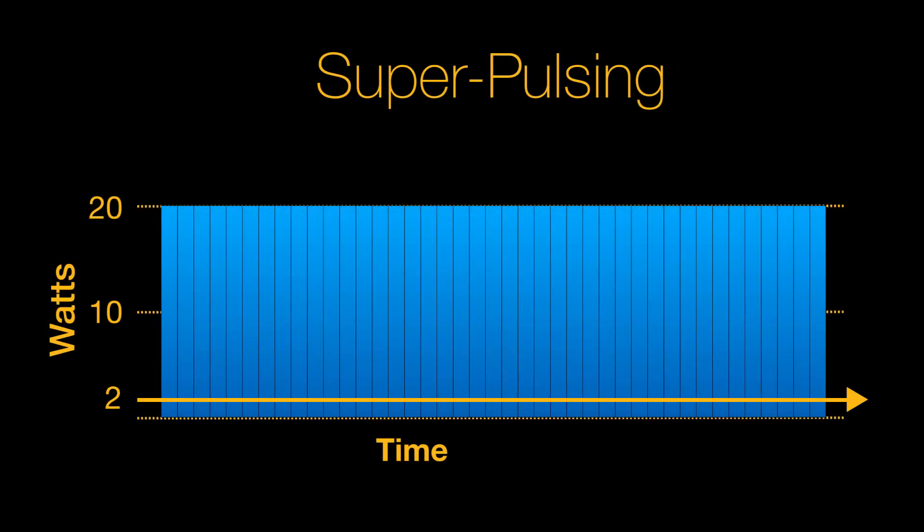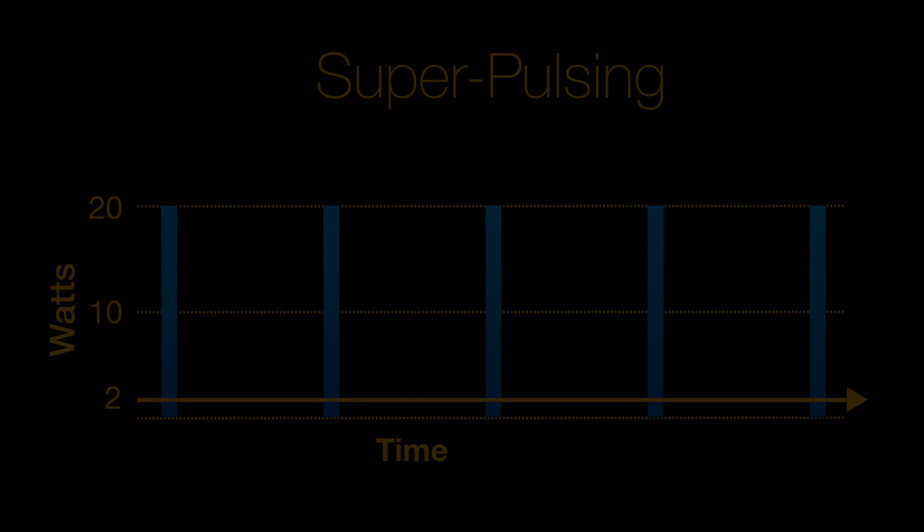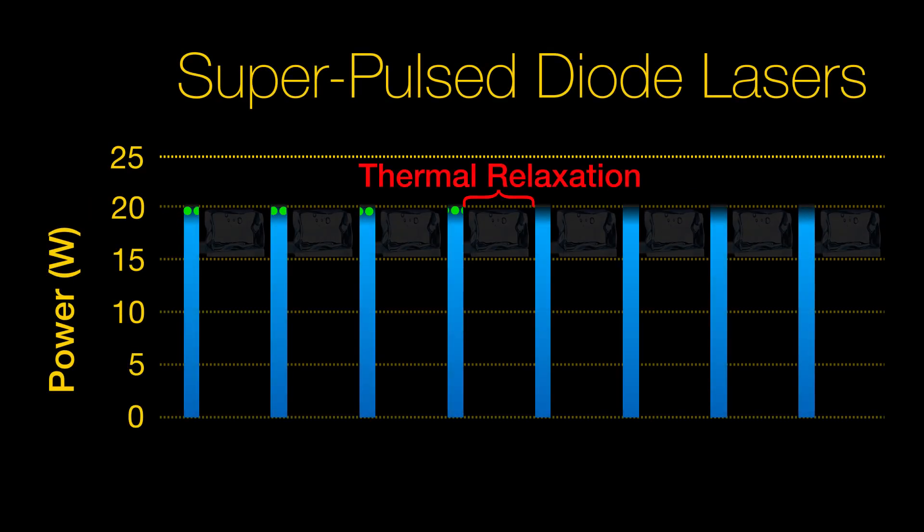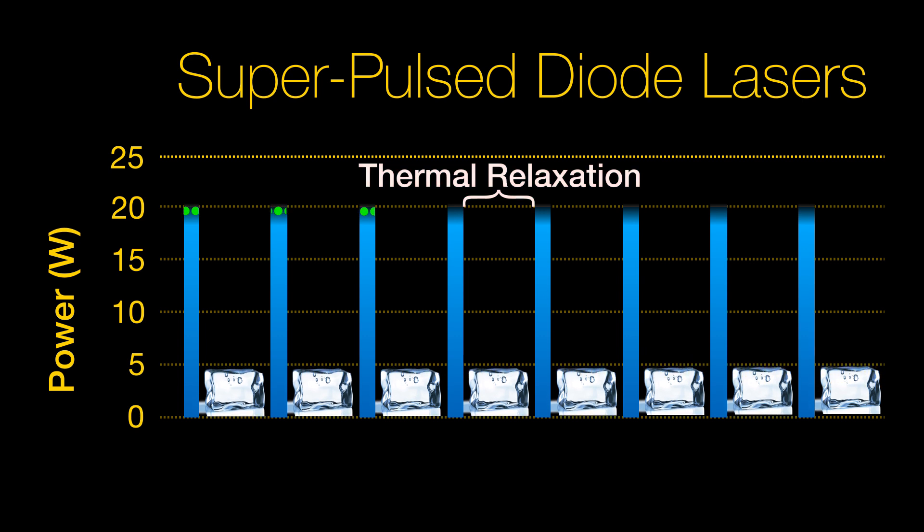Efficiency did not improve dramatically until higher pulses of energy were used. Super pulsing drives 7 to 10 times more energy than the average output. The time between pulses is called thermal relaxation and combined with high peak power, improves cutting speed and efficiency.